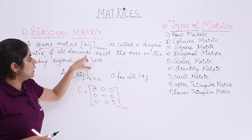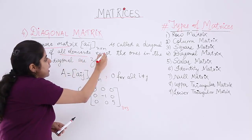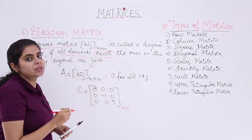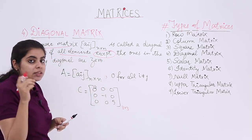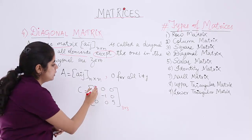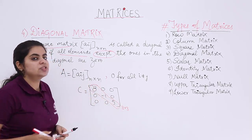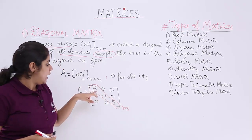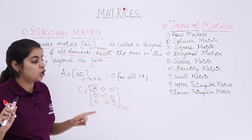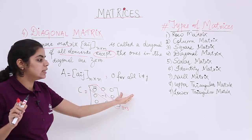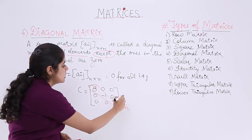All elements except the ones in the diagonal are 0. The diagonal here is the leading diagonal, which contains the elements 8, -1, and 5 — none of which are 0. The other elements are all 0, so this matrix C is a diagonal matrix.